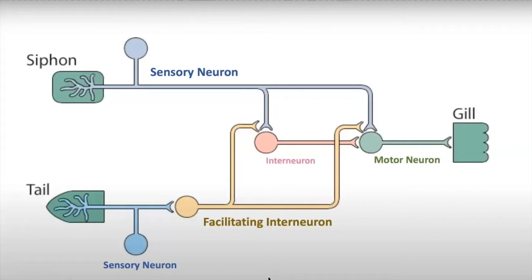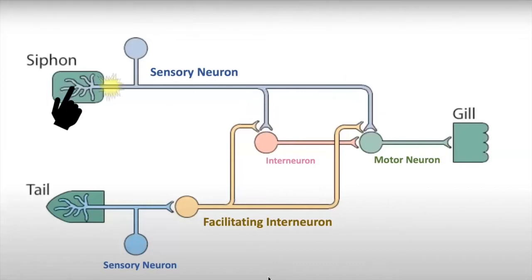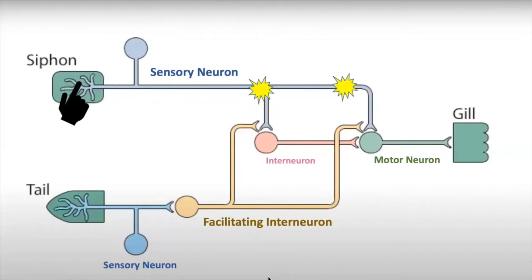When a touch stimulation is applied on the siphon, an action potential is sent through the sensory neuron, which synapses onto the interneuron and the motor neuron.